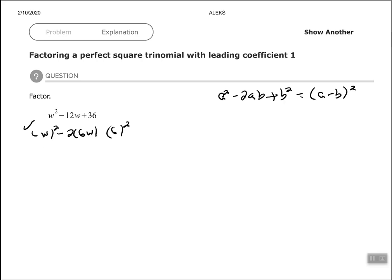So now we can factor this, keeping in mind that w is in the place of a, 6 is in the place of b. We always use that sign on the second term. So w minus 6 squared.